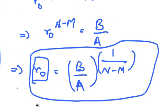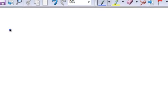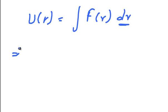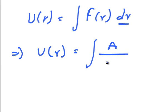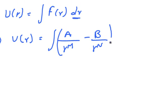The expression for the potential energy can be obtained by integrating equation 1 with respect to R — that is, integrating F(R) with respect to the interatomic spacing. So, the potential energy can be written as U(R) equals the integral of F(R) dR, which equals the integral of (A over R to the power M minus B over R to the power N) dR.